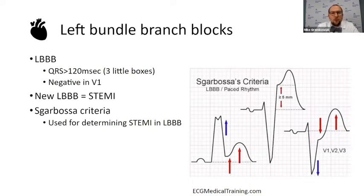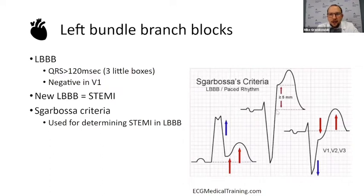A bundle branch block is a wide QRS that's greater than 120 milliseconds, meaning it's greater than three little boxes. If we look over here, starting at the QRS complex — one, two, three — and it's going into four here. That's a wide QRS complex.